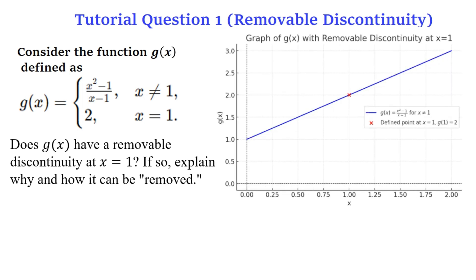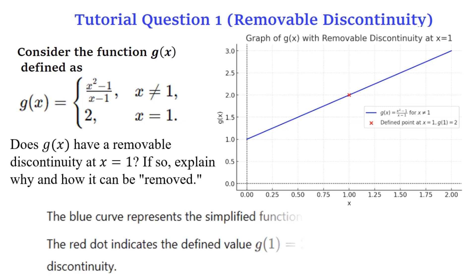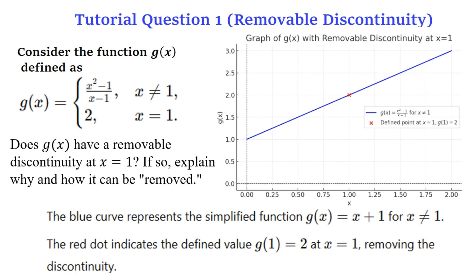Looking at the graph, you can see that at exactly x equals 1, there is a cross — a hole. That cross tells us that we are able to get a function value defined at x equals 1 only because we used 2 there. The graph confirms that g(x) has a removable discontinuity at x equals 1, and the function is undefined at that point.